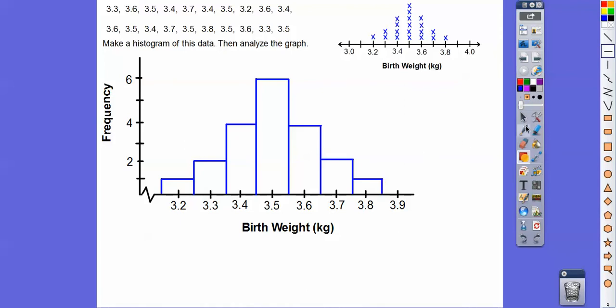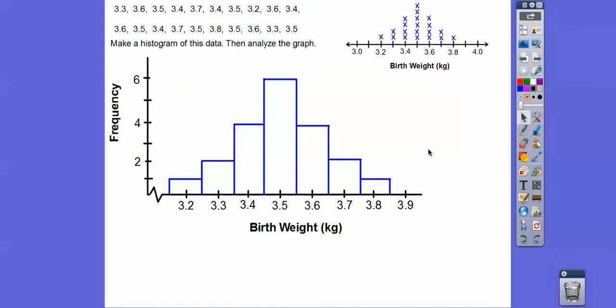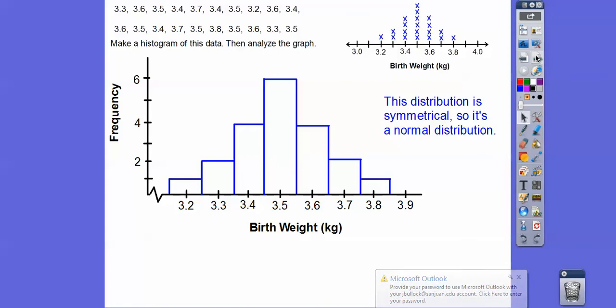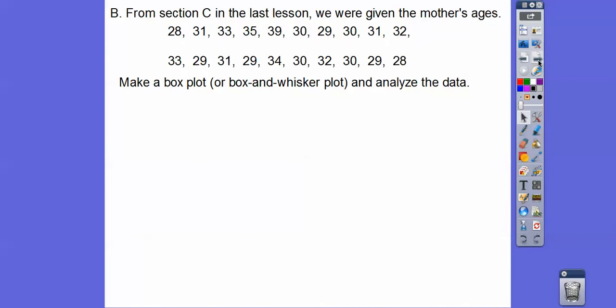Now describe the shape, because it says analyze this graph. Well, look, this is very symmetrical, just like the line graph. These are pretty much the same thing, and so when it's symmetrical, then we can say it's a normal distribution. Remember, uniform distribution, if they make like a rectangle, they're all about the same height. But this is a normal distribution, and skewed distribution would be if we had a bunch over here, and then it went down in this direction. Remember doing the skewed distribution on the mother's ages.